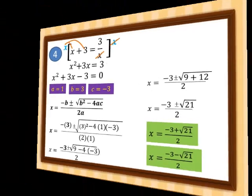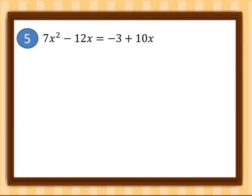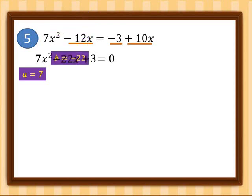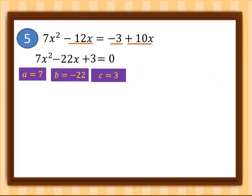The next example: 7x² − 12x = −3 + 10x. Rewriting in standard form, we combine like terms: −12x − 10x = −22x, and transposing −3 gives 7x² − 22x + 3 = 0. So a = 7, b = −22, and c = 3.